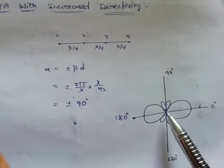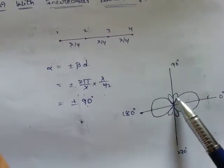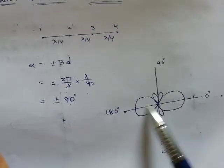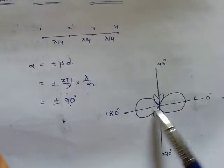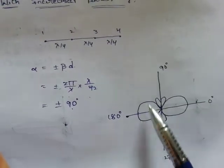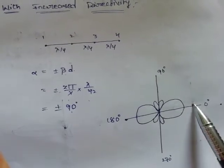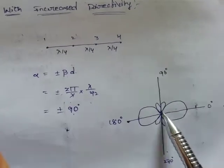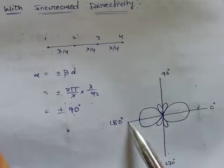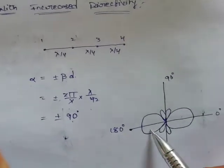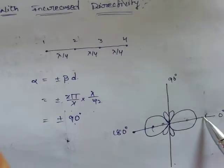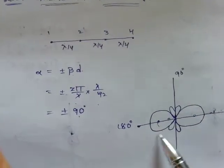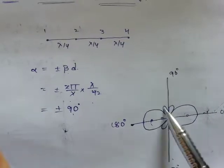For end fire array, the major lobe maxima is at 0 and 180 degrees — that is, along the axis of the array, not perpendicular to it. In broadside array, elements are placed along the axis but the radiation pattern is perpendicular to it, at 90 and 270 degrees. In end fire array, the radiation pattern is along the axis of the array.